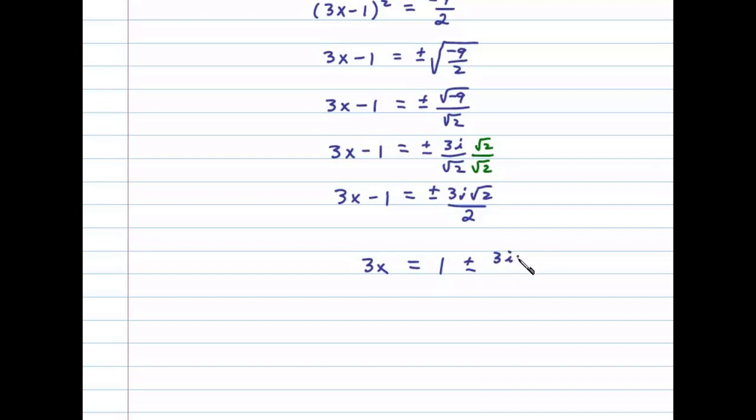Then we divide both sides by 3, or equivalently multiply both sides by 1/3. One-third times 3x leaves us with x.